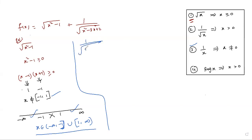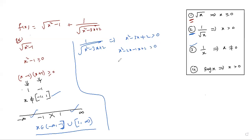The second case is 1 over root of (x squared minus 3x plus 2). For 1 by root x, the condition is x greater than 0. So x squared minus 3x plus 2 greater than 0. Factorize: x squared minus 2x minus x plus 2, which gives x(x minus 2) minus 1(x minus 2), so (x minus 2)(x minus 1) greater than 0. Critical values: x minus 2 equals 0 gives x equals 2; x minus 1 equals 0 gives x equals 1.